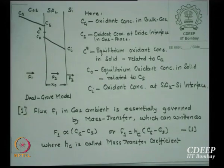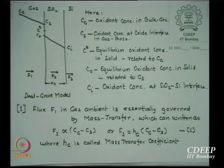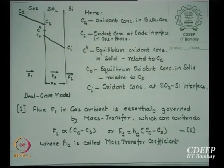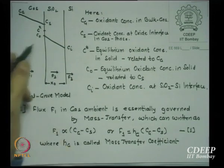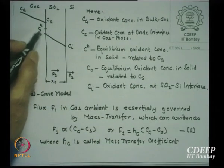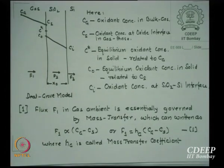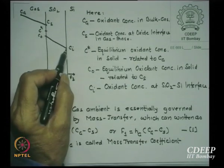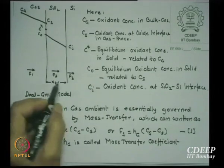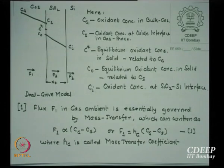We define C* as the equilibrium oxidant concentration in the solid related to Cg, and C0 as the equilibrium oxidant concentration in solid related to Cs. The initial oxide thickness is Xi, and X0 is the oxide thickness we want to find at a given time and temperature. Ci is the initial concentration at the interface.